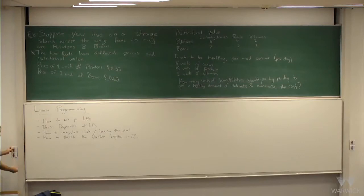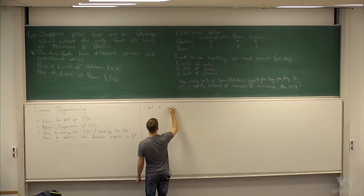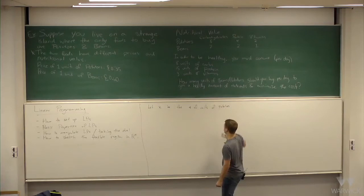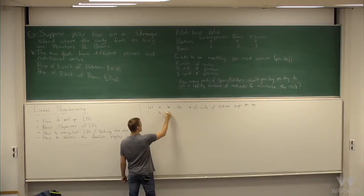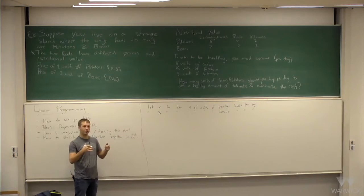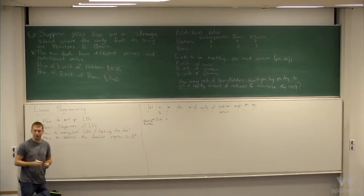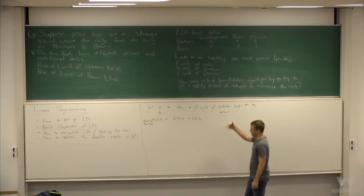To solve this mathematically, it's useful to come up with some variables. Let X1 be the number of units of potatoes that you buy per day, and X2 be the number of units of beans that you buy per day. The objective function is cost — we want to minimize the cost. The cost is just taking the price per unit and multiplying it by the number of units.